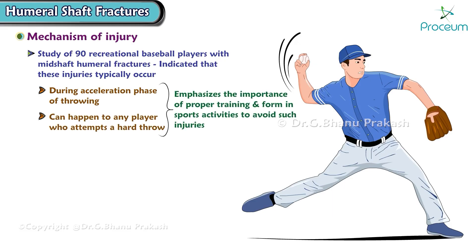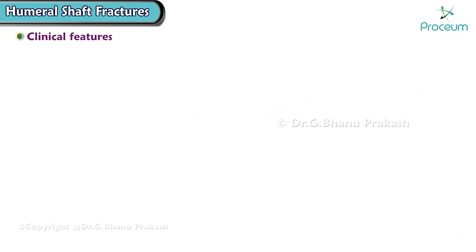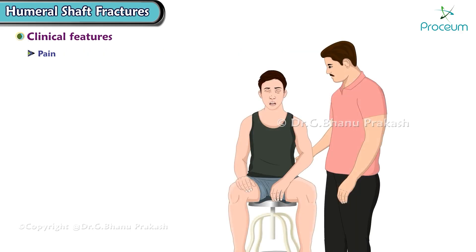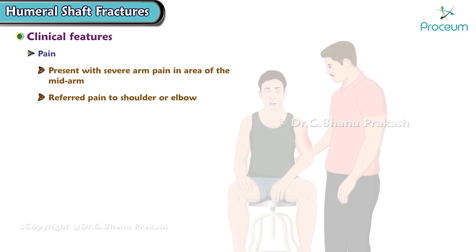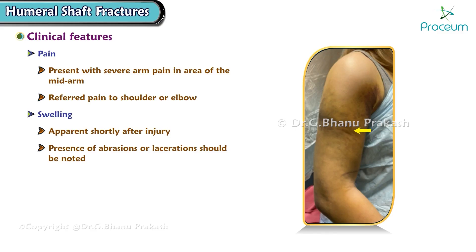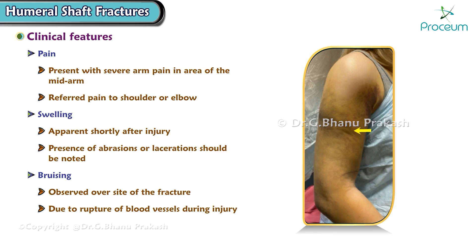Humerus fractures present with distinctive clinical features. Patients with mid-shaft humeral fractures typically present with severe arm pain in the area of the mid-arm, but may have referred pain to the shoulder or elbow. Swelling and ecchymosis are often apparent shortly after the injury, and the presence of abrasions or lacerations should be noted. Bruising or discoloration of the skin may be observed over the fracture site due to the rupture of blood vessels during the injury.